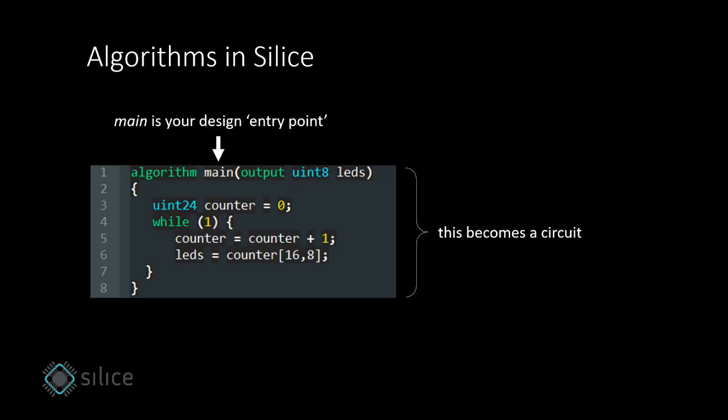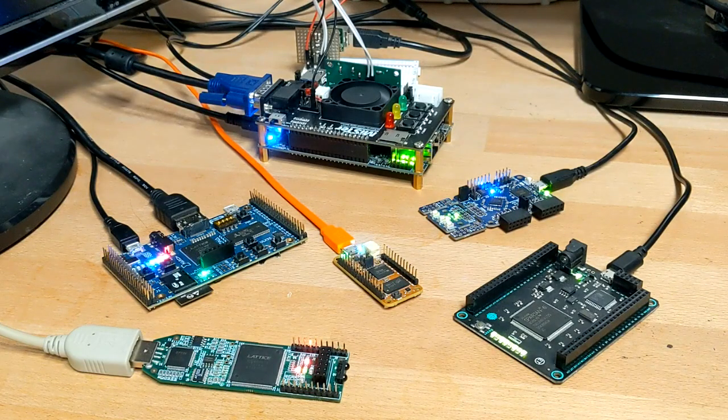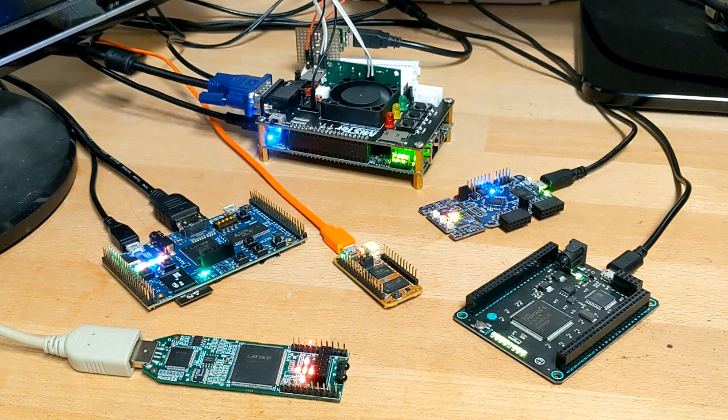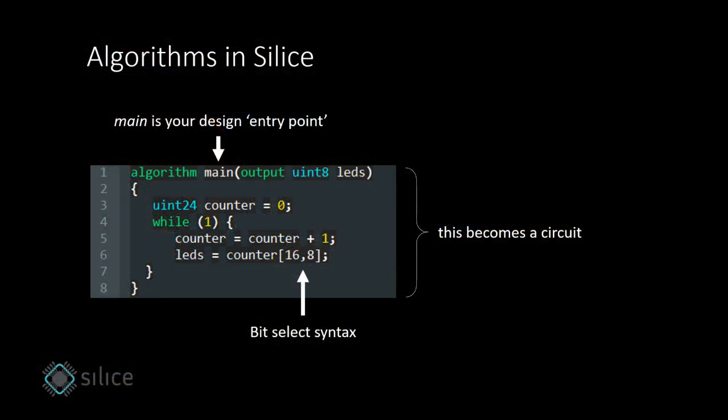So how do we do that with Silice? Every design has a main algorithm. In a way, this is the entry point of the design. The main algorithm always becomes a circuit. Here we have implemented Blinky, the hello world of FPGAs, where we simply blink LEDs. Note the bit-select syntax, that here selects 8 bits from bit 16 and assigns them to the outputs that drive the LEDs.